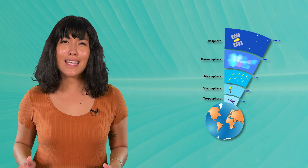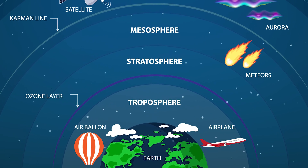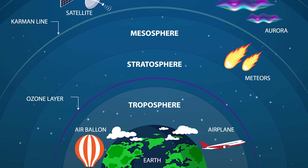Since we already know about the layers of the atmosphere, let's see how they contribute to weather phenomena. In which layer of the atmosphere does weather occur? The troposphere is where all our weather happens. It's the lowest layer and contains the air we're breathing right now. Clouds, rain, snow — it all happens here because it's the layer where we have the right mix of air pressure and temperature.